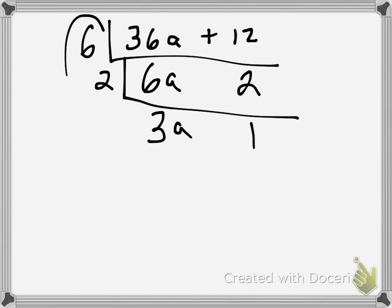Remember, to find the greatest common factor, I'm taking those two numbers that are on the outside of my ladder, on the left here, and I'm multiplying them. So my GCF is equal to 12. That's going to be on the outside of my parentheses.